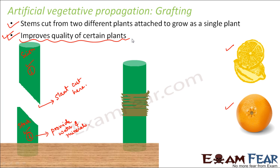So these are the methods by which vegetative propagation can be done artificially. By now we have discussed a lot of methods by which asexual reproduction takes place. In all these methods, what did we see? We do not require two parents — everywhere we just require one parent. So one parent plant was able to give rise to new plants in all the artificial as well as natural vegetative propagation. Even in methods like fission, budding, and fragmentation, there was just one parent involved.